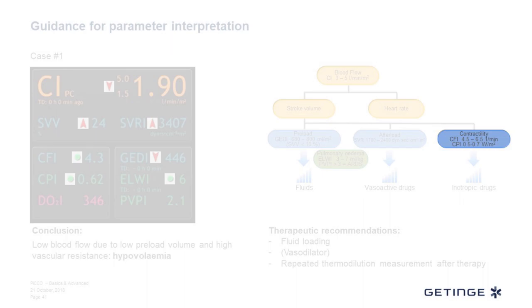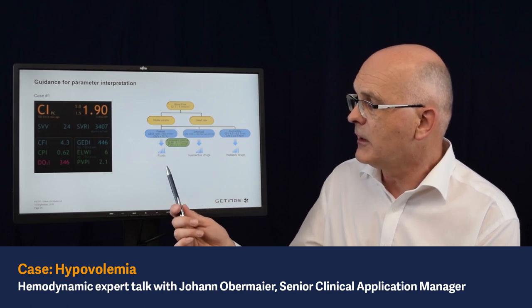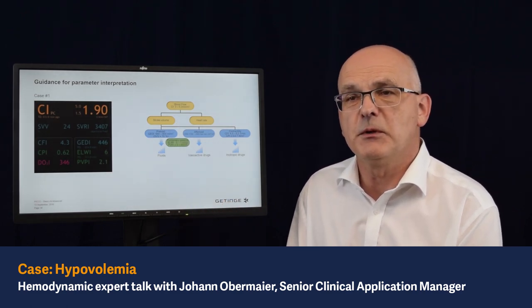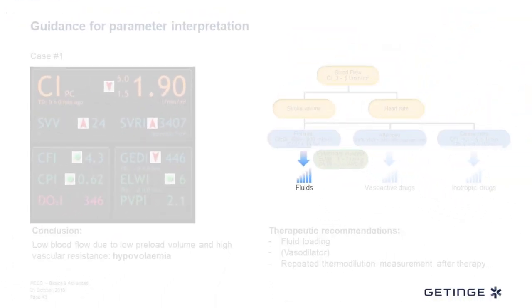We also have parameters on the lung situation: the extravascular lung water index and the pulmonary vascular permeability index. Depending on the findings, there are several treatment options: to change the preload, we add or withdraw fluids; to change the vascular resistance, we can use vasoactive drugs; and to change the contractility, we can apply inotropic drugs.